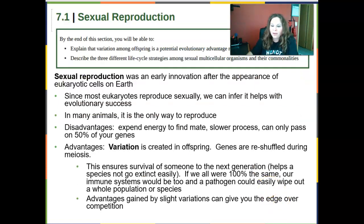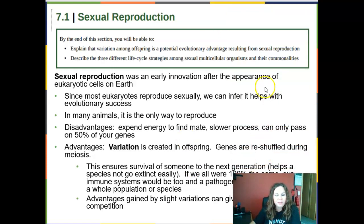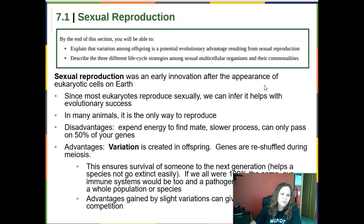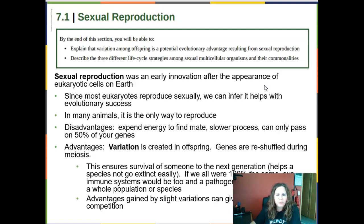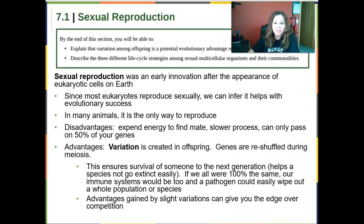So after our introduction, we get to Section 7.1, which is sexual reproduction. By the end of this section, you should be able to explain that variation among offspring is a potential evolutionary advantage resulting from sexual reproduction, and describe the three different life cycle strategies among sexual multicellular organisms and their commonalities.